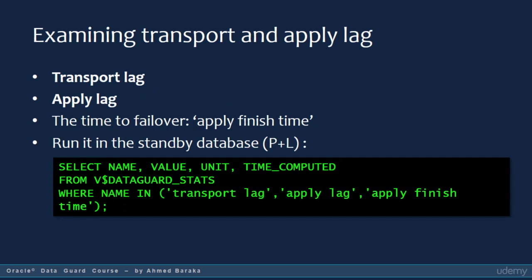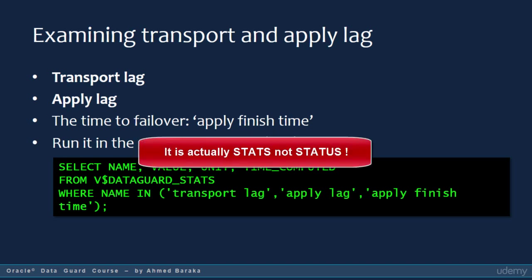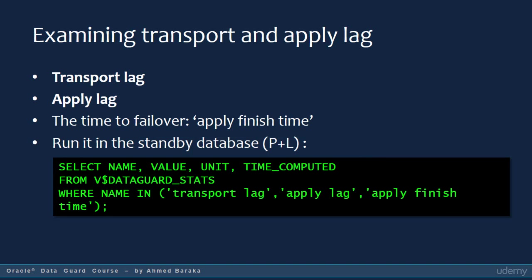In Data Guard we have two types of lags: transport lag and apply lag. Transport lag is the amount of time between redo generated in the primary and redo transferred to the standby — essentially the lag resulting from the archived redo log gap — and represents the data you will lose in case of failover. Apply lag is how much the apply is lagging behind the data in the primary. To get both, run the query against the V$DataGuard Status view in the standby. The query also retrieves the apply finish time — the expected time for failover, which we call the Time to Recover Objective (TRO).